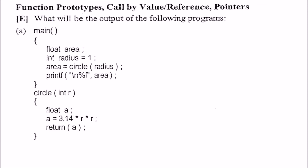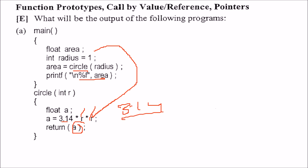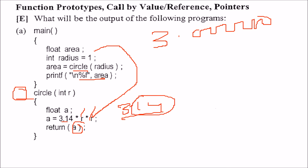What will be the output of this program? We are passing 1 to a circle function. The area is 3.14 × 1 × 1 = 3.14. But 3.14 will not be printed — instead we get 3.00000. Why? Because the circle function has no return type, and in C, if no return type is given, it defaults to integer. So 3.14 is truncated to 3.